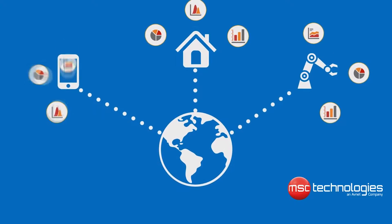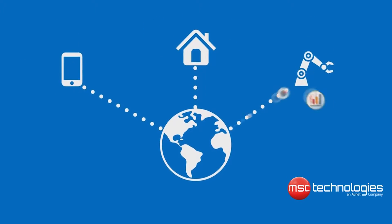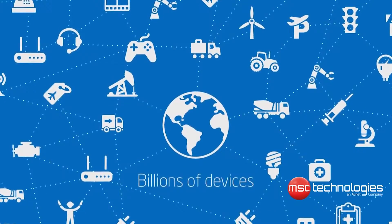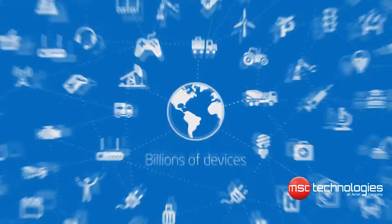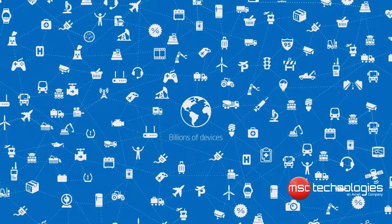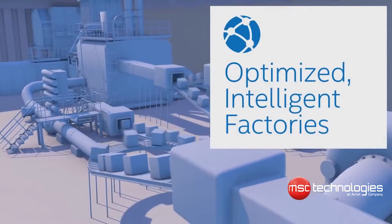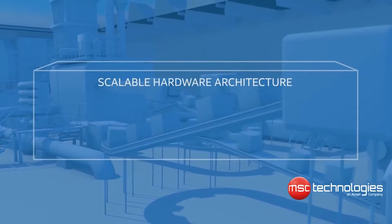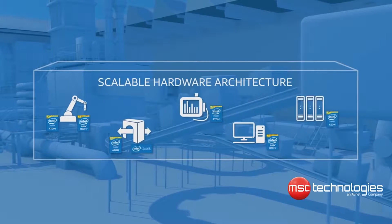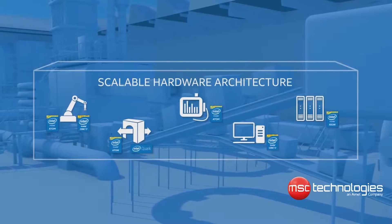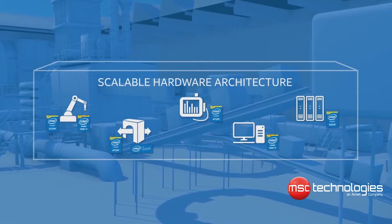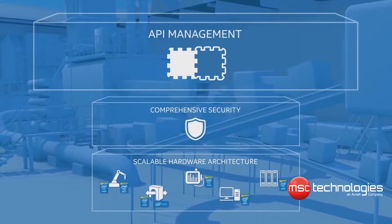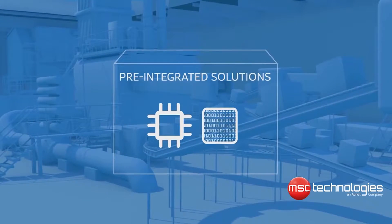Billions of devices will be connected to the Internet. The Internet of Things represents a complete end-to-end architecture. For example, in an intelligent factory, scalable hardware will be joined by security layers and API management to result in pre-integrated solutions for the IoT, enabling vital new capabilities.